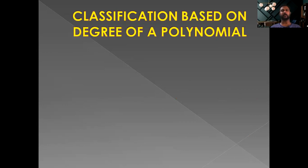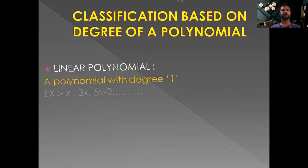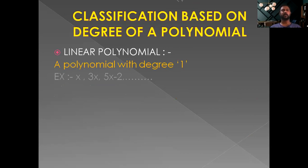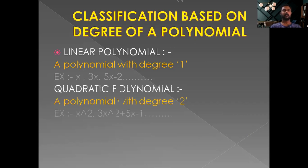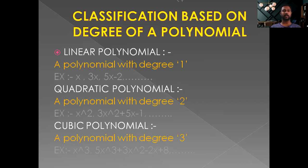Let us classify polynomials based on their degree. A polynomial with degree 1 is called a linear polynomial — examples include x, 3x, and 5x minus 2. A polynomial with degree 2 is called a quadratic polynomial — examples include x square, 3x square, and 3x square plus 5x minus 1. A polynomial with degree 3 is called a cubic polynomial — examples include x cube and 5x cube plus 3x square minus 2x plus 8.